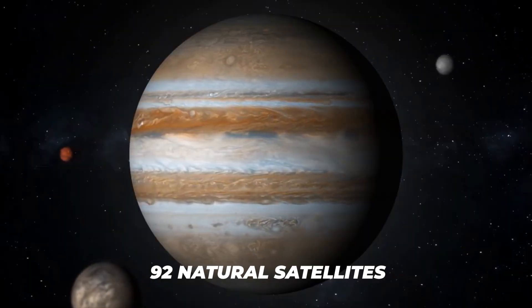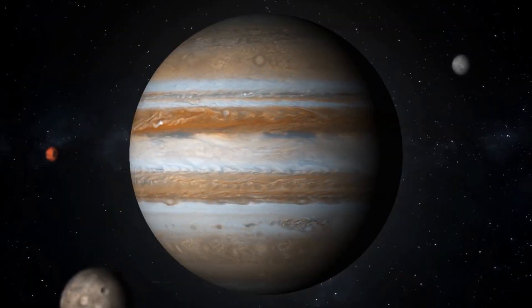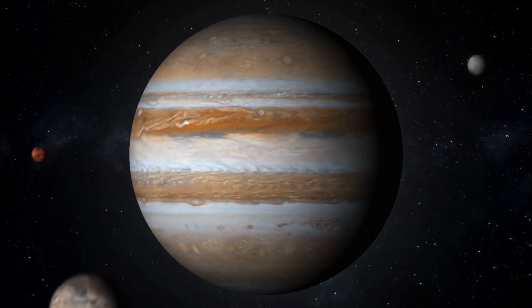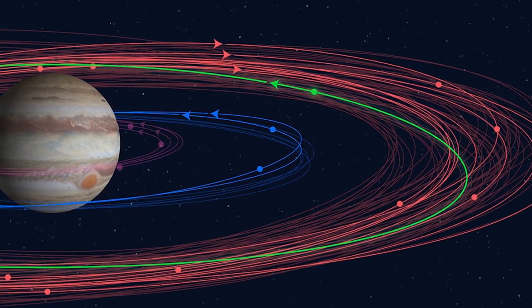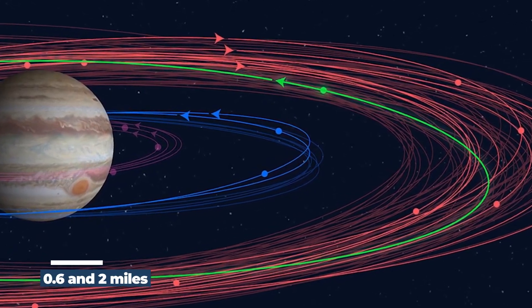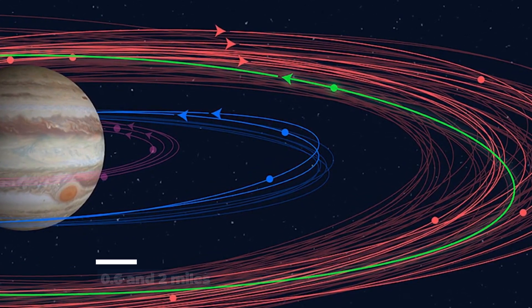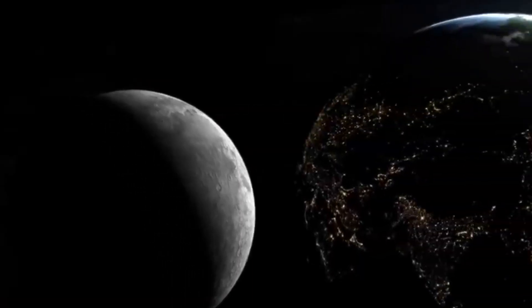This means that the gas giant now holds the record for having the most moons of any planet in our solar system. The new moons all have diameters between 0.6 and 2 miles, making them all significantly smaller than Earth's moon.